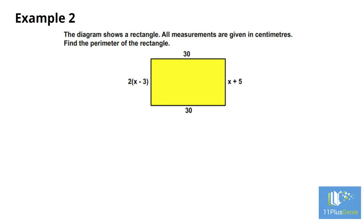Before we can work out the perimeter of the rectangle, we must work out the value of x. We know that in a rectangle, the opposite sides are equal. The side with length 2x minus 3 must be equal to the side with length x plus 5.